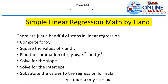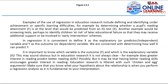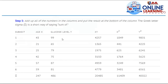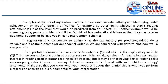Simple linear regression by hand. There are just a handful of steps. First, compute x and y. Second, square the values of x and y. Third, find the summation of x, y, xy, x squared, and y squared — compute the summation of all columns. Fourth, solve for the slope. Fifth, solve for the intercept by setting x to zero to find y, or y to zero to find x.